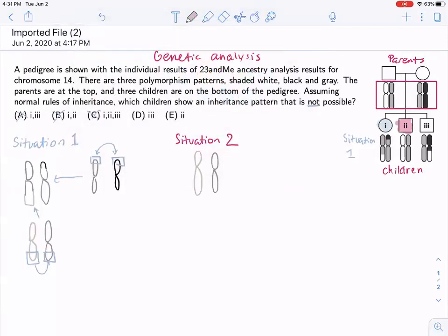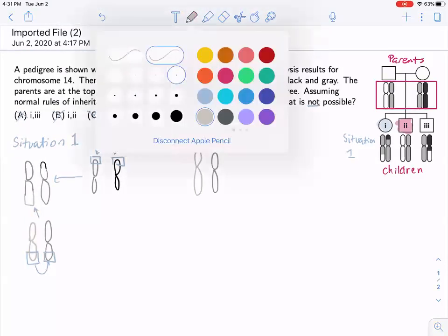And so how did this happen? So we know that this lighter gray color could have come from the mother, or the lighter gray has to come from the father. Because as we know, that's the only one that has it.